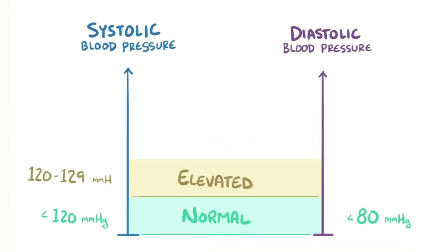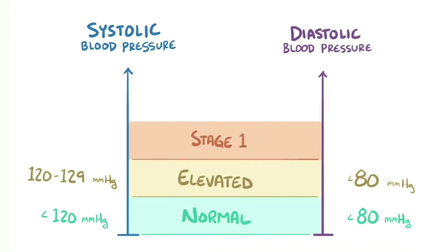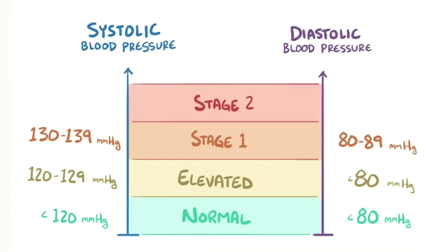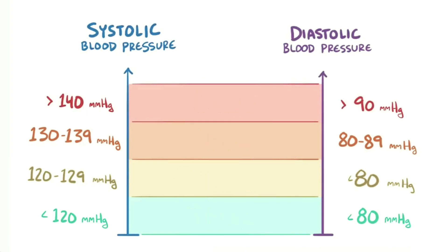Elevated systolic blood pressure is considered between 120 and 129 millimeters of mercury with a diastolic of less than 80. Stage one hypertension is between 130 and 139 mmHg systolic and between 80 and 89 mmHg diastolic. Stage two hypertension is defined as 140 mmHg or higher systolic and 90 mmHg or higher diastolic.